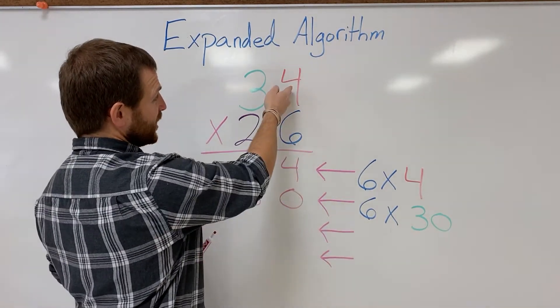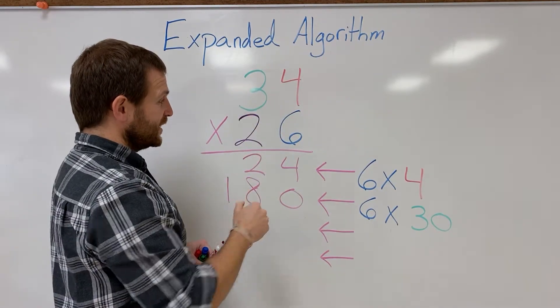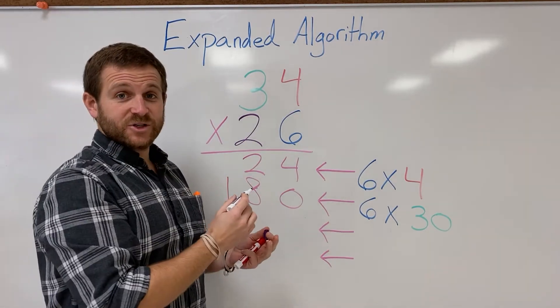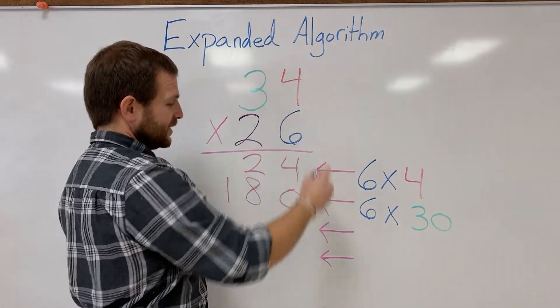Now I'm done with my 6s. I've multiplied it by the 4 and by the 30. So my 6s are all done. I'm gonna move on to my 20s. The first thing I'm gonna start with is 20 times 4.